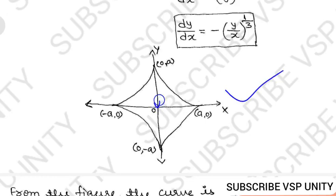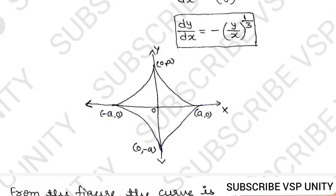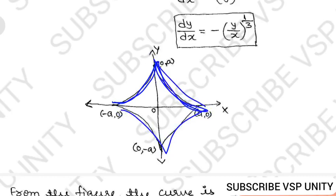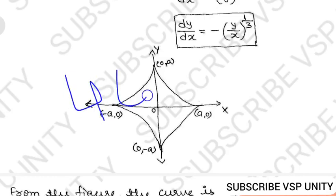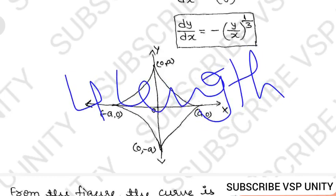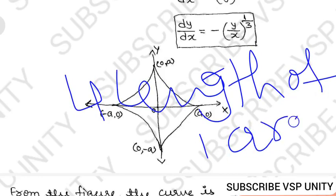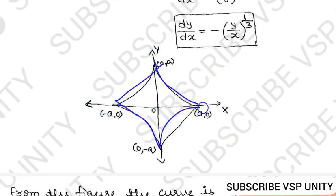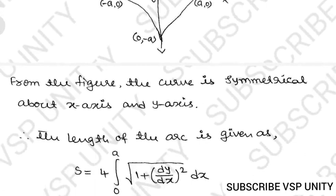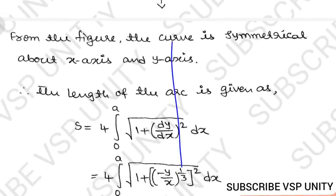Observe the shape of the asteroid. From the origin, the curve extends a distance 'a' in all four directions along the axes. So the total length of the asteroid is the sum of four equal arc lengths — one in each quadrant. The curve is symmetrical about both the x-axis and y-axis.